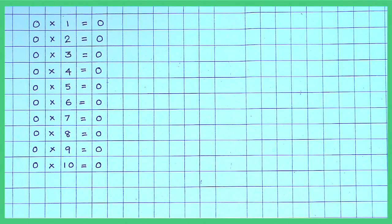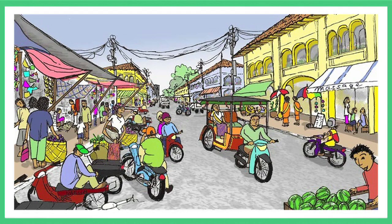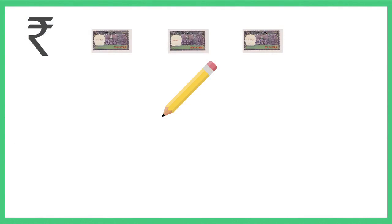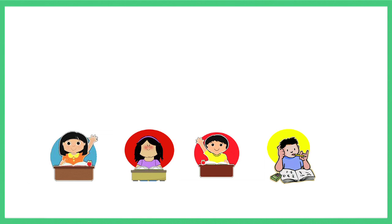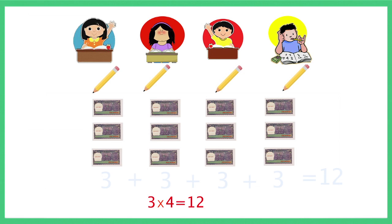Here's a quick look at the 0 times table. Here's how we use multiplication in our daily lives. If one pencil costs 3 rupees, what is the cost of buying a pencil each for Geeta, Amina, Raju, and John? 3 multiplied by 4 gives us 12. The cost is 12 rupees.